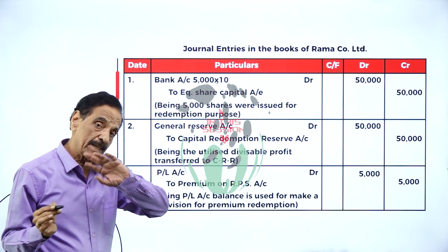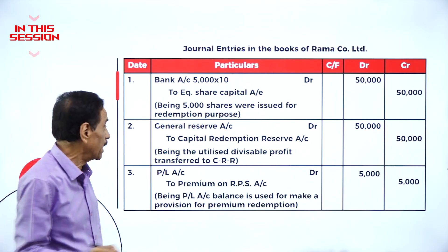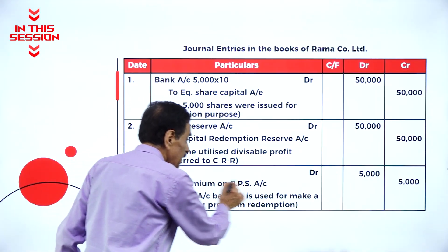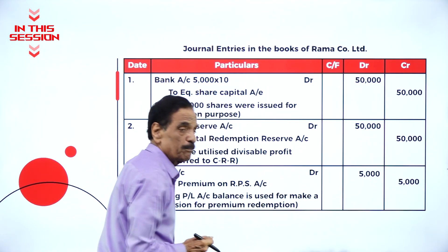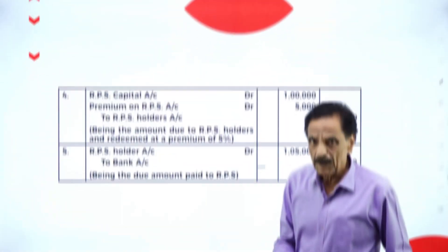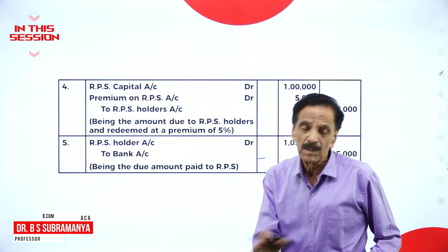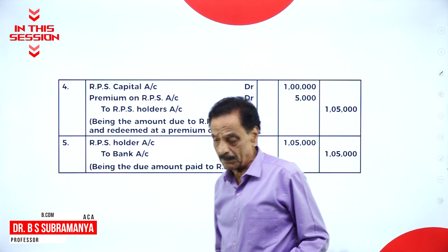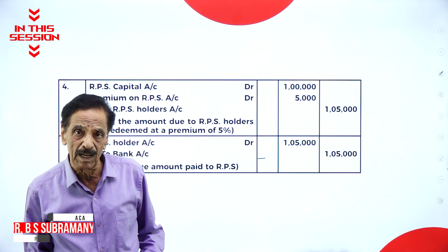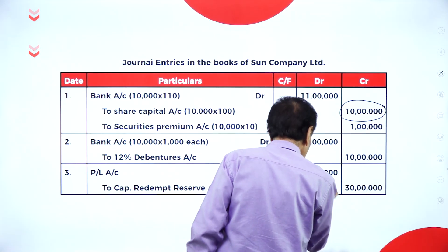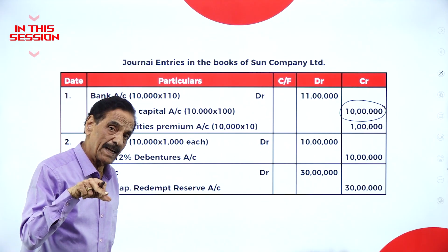Create CRR for another $50,000 from the end result. Profit and loss account debit to premium mark reduction of preference. Premium paid from equity share premium. If the equity share premium is not available, take from the profit and loss account. Create the CRR to the extent of $30 lakh.